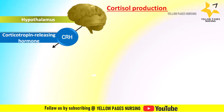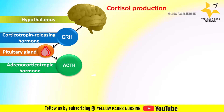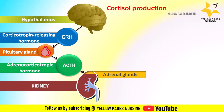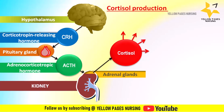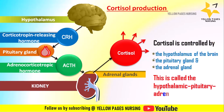The process of cortisol production begins in the hypothalamus, a region of the brain. When the hypothalamus detects a need for cortisol — such as a response to stress or as part of the body's natural daily rhythm — it releases corticotropin-releasing hormone (CRH). CRH stimulates the pituitary gland to release adrenocorticotropic hormone (ACTH), which travels through the bloodstream to the adrenal glands. ACTH then stimulates the adrenal cortex to produce cortisol. This system is called the hypothalamic-pituitary-adrenal (HPA) axis.